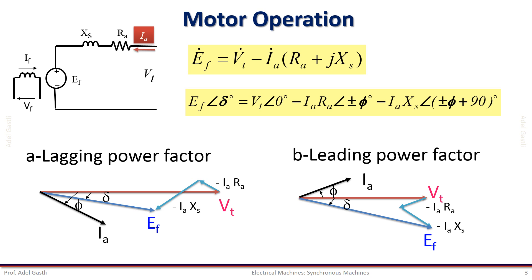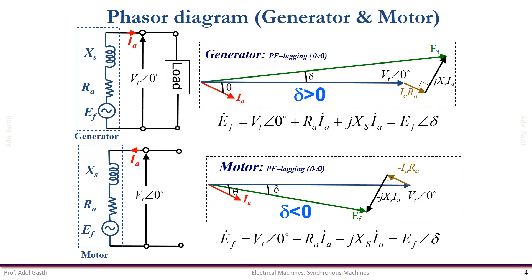Now for the leading power factor case, we can proceed in a similar way and obtain the following phasor diagram. Notice that in this case the back EMF is also lagging the terminal voltage with an angle delta. So we can conclude that during motoring operation the phase angle delta between the back EMF and the terminal voltage is always negative. By comparing the generator and motor phasor diagrams, we can conclude that the angle delta is always positive during generator operation mode and always negative during motor operation mode.